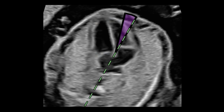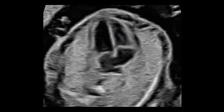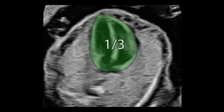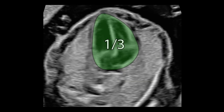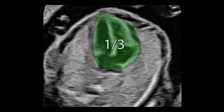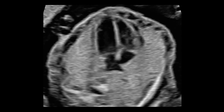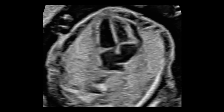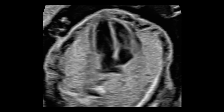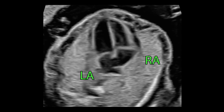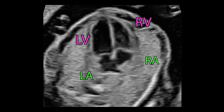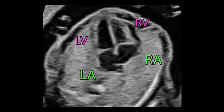The cardiac axis is 45 degrees plus or minus 20 degrees. The normal size of the heart is about one-third of the area of the chest. The heart beats regularly, and we confirm synchronous contractions of both atria and ventricles.